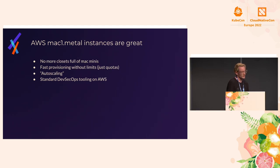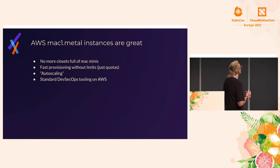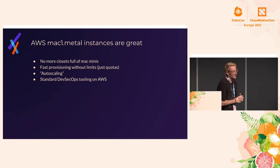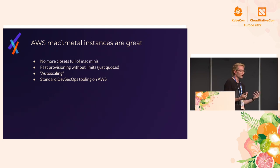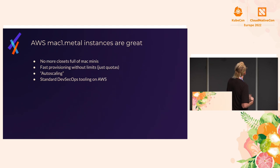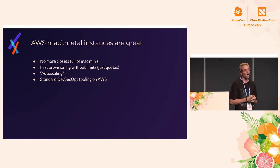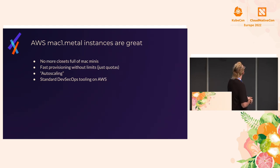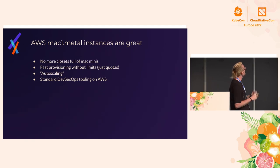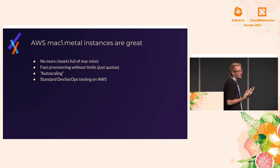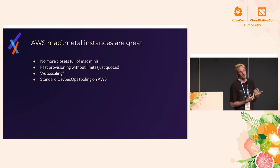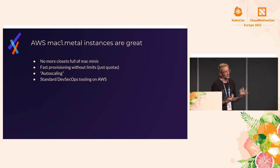We launched this company just a few years ago, right around the time that the new AWS Mac1 Metal instances were coming out. We're super excited about this, especially when building iOS apps at scale. This means potentially no more big, messy closets full of Mac minis. There's fast provisioning now, in theory without limits beyond AWS resource quotas. AWS is well known for auto-scaling — that's in scare quotes because it's up for debate — but in theory it's a feature provided. And standardizing DevSecOps on AWS is awesome rather than dealing with other infrastructure providers or bringing your own hardware.